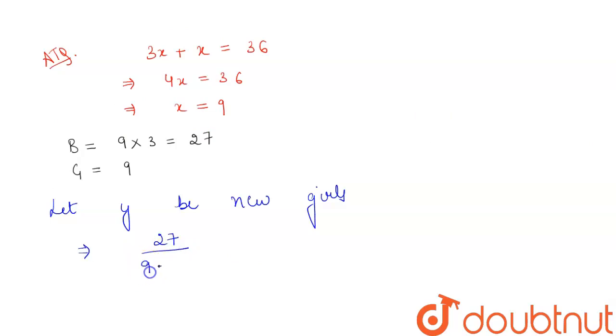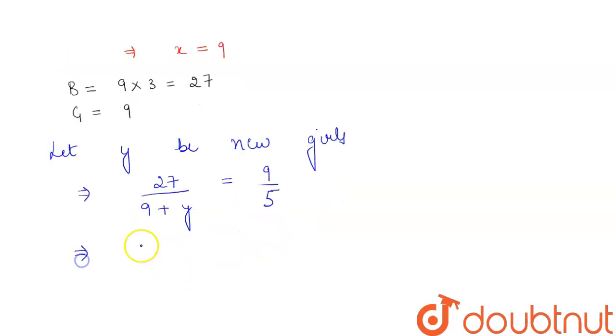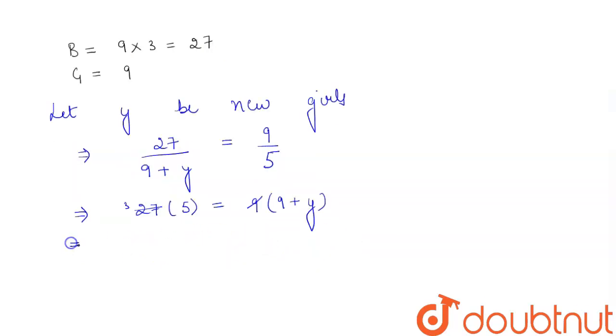ratio 9 plus y is given to be equal to 9 by 5. Now cross multiplying, we will get 27 into 5 is equal to 9 into 9 plus y. We see that this cancels by 3, and this becomes 3 into 5 will be 15 equals 9 plus y. This gives us the value of y to be equal to 15 minus 9, that is 6.